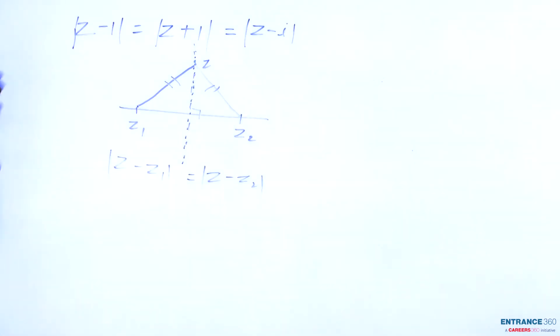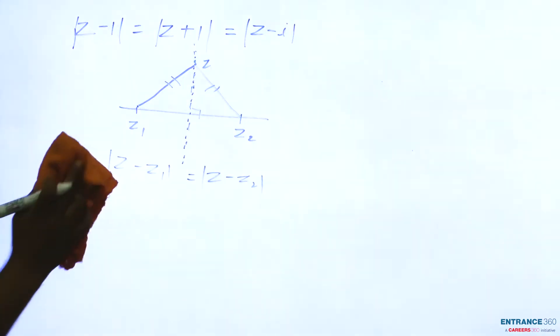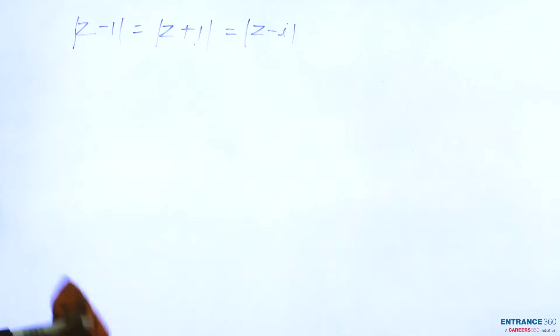This is the concept we are using here. Using the perpendicular bisector of z1 and z2, you can solve this question very easily. Let's see how to solve it.